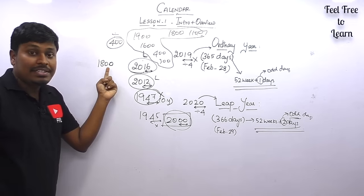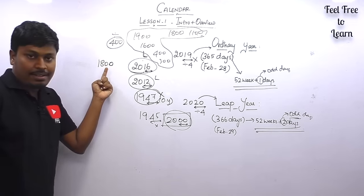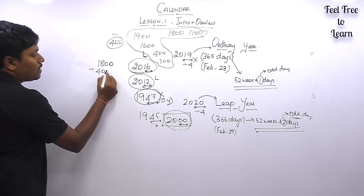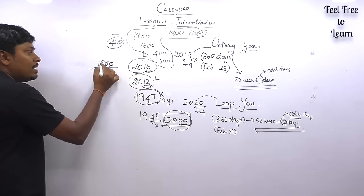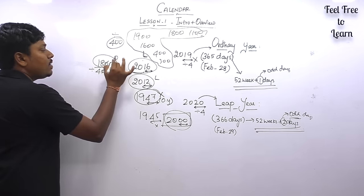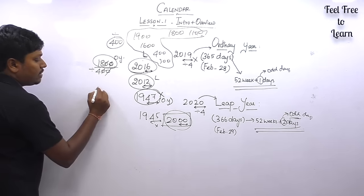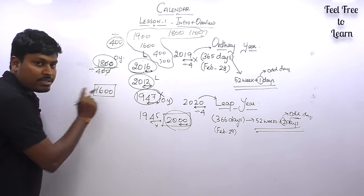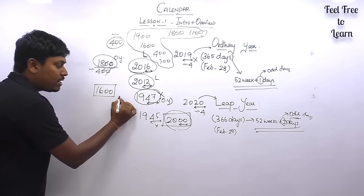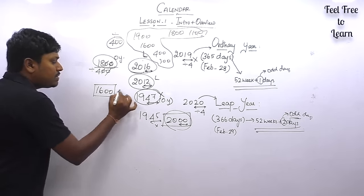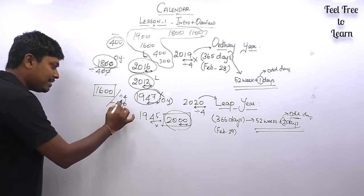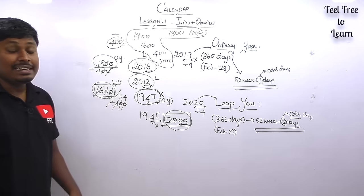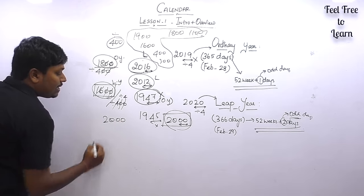For example, 1800: the last two digits are 00, so it's a century year. For century years, do not divide by 4 — divide by 400. Is 1800 divisible by 400? No. So 1800 is an ordinary year, not a leap year. For 1600: last two digits are 00, so it's a century year. Divide 1600 by 400 — yes, it is divisible, so 1600 is a leap year.